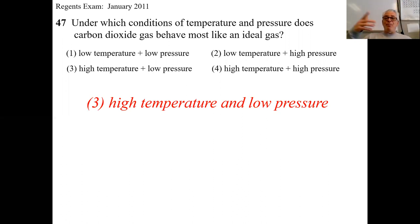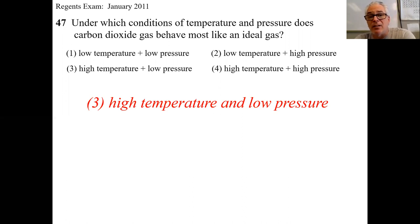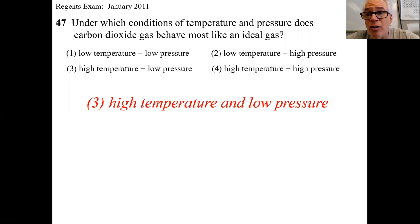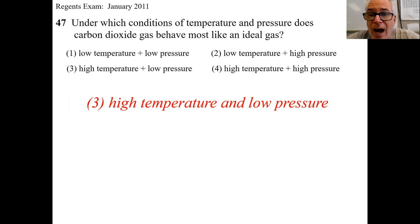If it happened to say the reverse — which conditions would be least ideal — then it would be cold and high pressure, because cold would squish them together and high pressure would squish them together and turn them into a liquid. Most ideal: high temperature, low pressure — hot and loose.